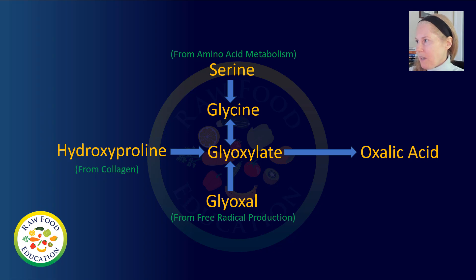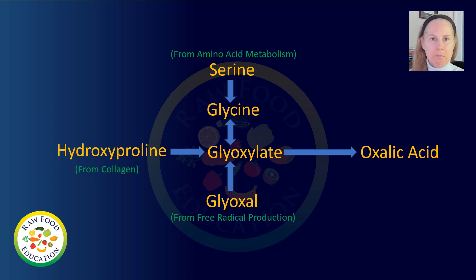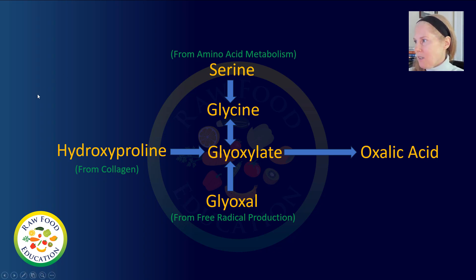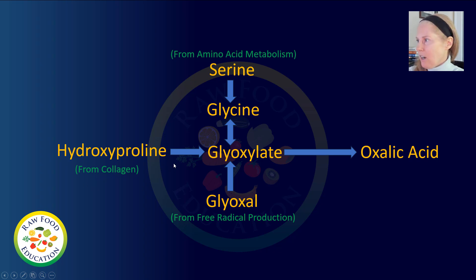The next part of this pathway involves hydroxyproline. In our body we have connective tissue — collagen is an important part of that. Collagen needs to be replaced from time to time, and when it's broken down during turnover, we get the formation of hydroxyproline. Hydroxyproline can be converted into glyoxalate and ultimately oxalic acid. Another breakdown product of collagen metabolism is glycine, and both hydroxyproline and glycine are converted into glyoxalate and ultimately oxalic acid.